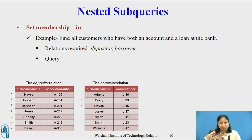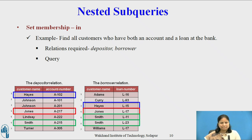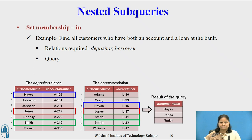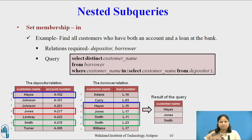Consider one more example: find all the customers who have both an account and a loan at the bank using set membership. The relations required are depositor and borrower. In this example, customers Hayes, Jones, and Smith have both an account and a loan at the bank. The query using the set membership operator IN is: SELECT DISTINCT customer_name FROM borrower WHERE customer_name IN (SELECT customer_name FROM depositor).